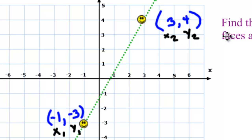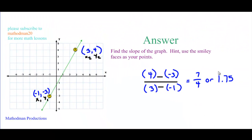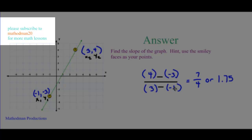It doesn't matter which point you consider as your first and second. You could have flip-flopped these, as long as you use the formula correctly. Once you have everything labeled, all you have to do is substitute: Y2 minus Y1 over X2 minus X1. In conclusion, as long as you have two points, you can always use that slope formula. Hopefully I was of help to you, and please subscribe to Mathodman20 for more math lessons.